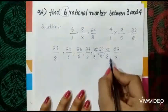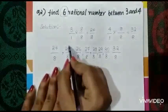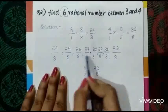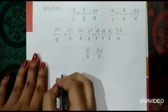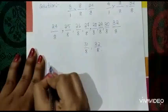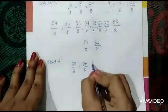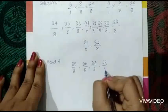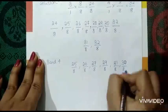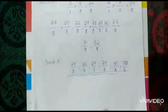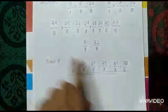So the rational numbers which lie between 3 and 4 are 25/8, 26/8, 27/8, 29/8, 30/8, and 31/8 — any 6 rational numbers which lie between 24/8 and 32/8.